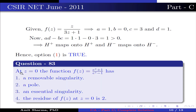Question number 83. At z = 0, the function f(z) = (e^z + 1)/(e^z - 1) has: option 1, a removable singularity; option 2, a pole; option 3, an essential singularity; option 4, the residue of f(z) at z = 0 is 2.